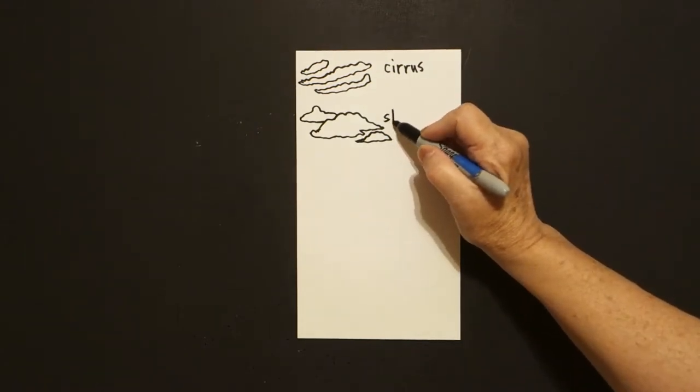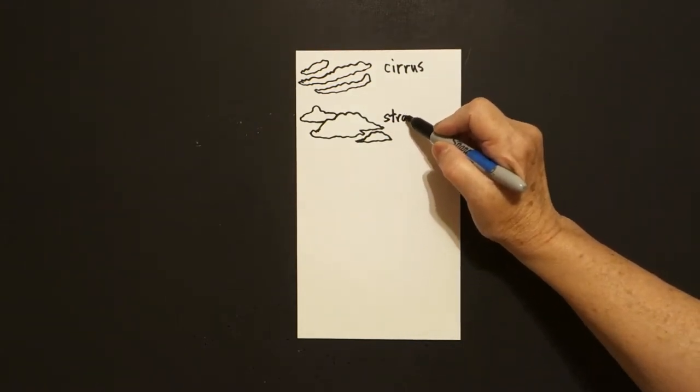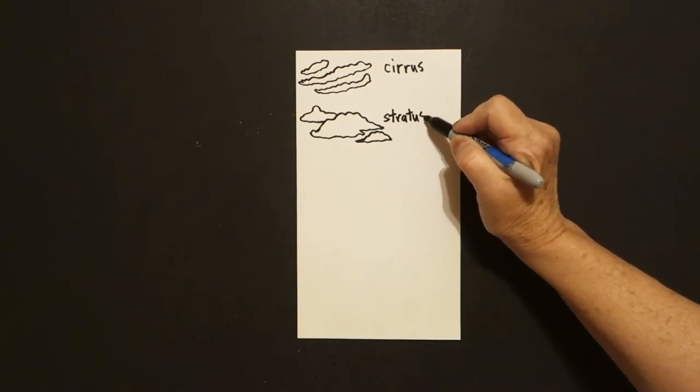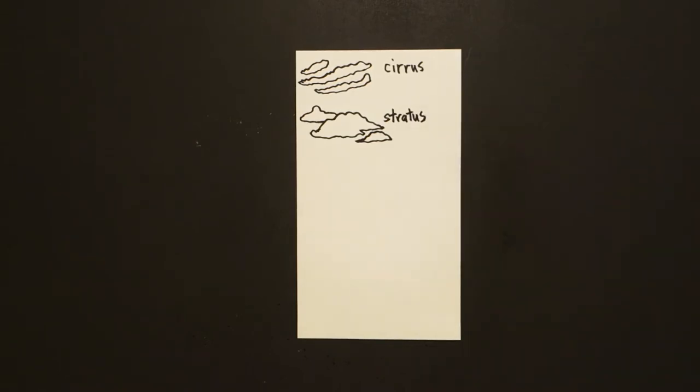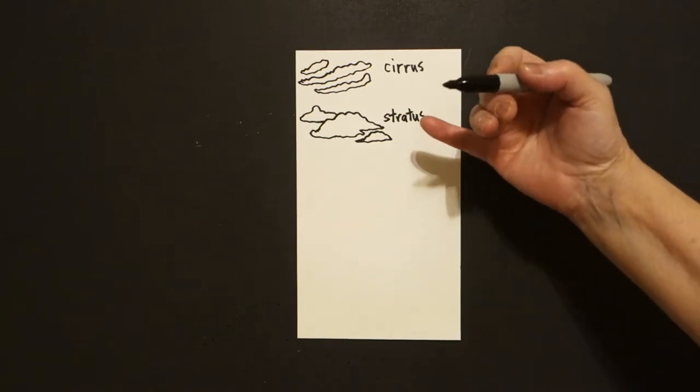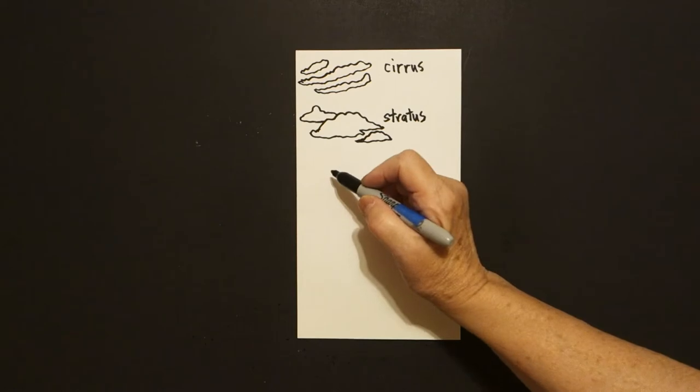These are called stratus, stratus clouds and they are wide blankets of gray, high fog and they're low, lower in the sky.